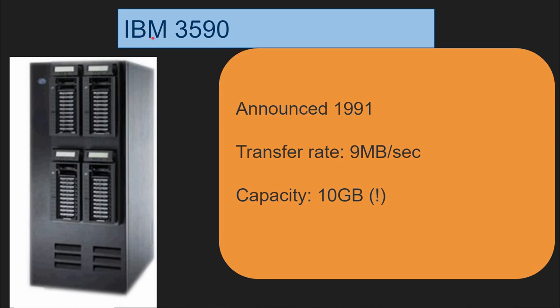After that, IBM announced the IBM 3590 tape unit device. It now had a 9 megabytes per second transfer rate and a full 10 gigabytes of capacity per cartridge. Again people thought that solved the storage, archive, and backup problem once and for all. Little did they know that storage demand was just about to explode with the digital age and the internet — the amount of data needed to be backed up and stored on tape was only starting to take off.